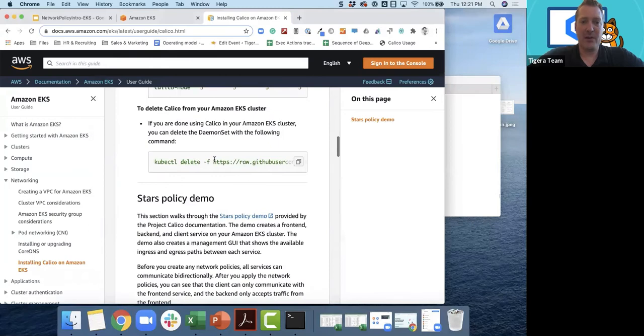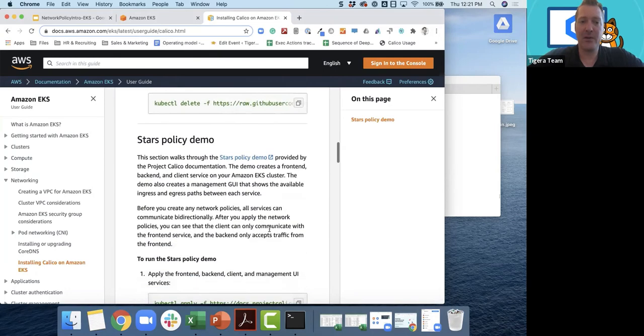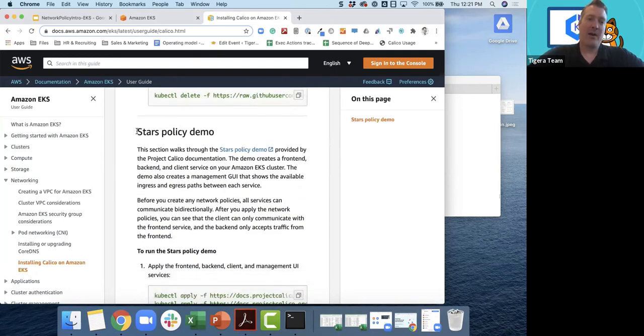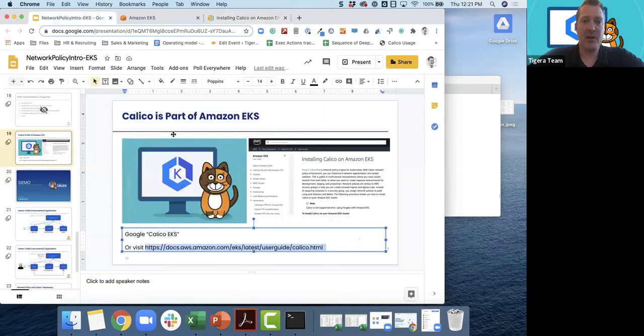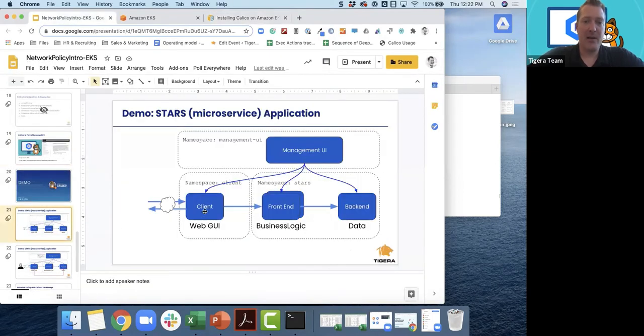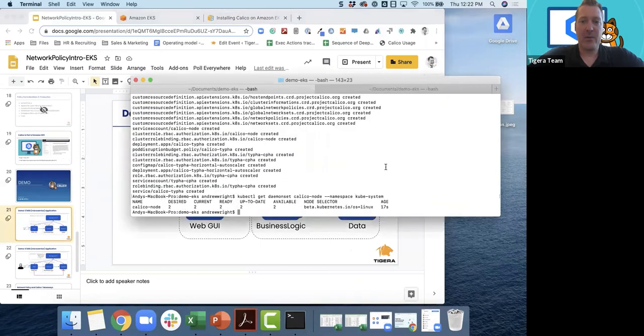You can also delete it. There's some instructions here if you'd like to clean up your cluster when you're done and you want to delete Calico, it's very quick to do that. Right here in the documentation, it actually walks you through the STARS policy demo, which is a demo I'd like to share today. There are frontend, backend, client management UI services, as I showed you in the slide here.